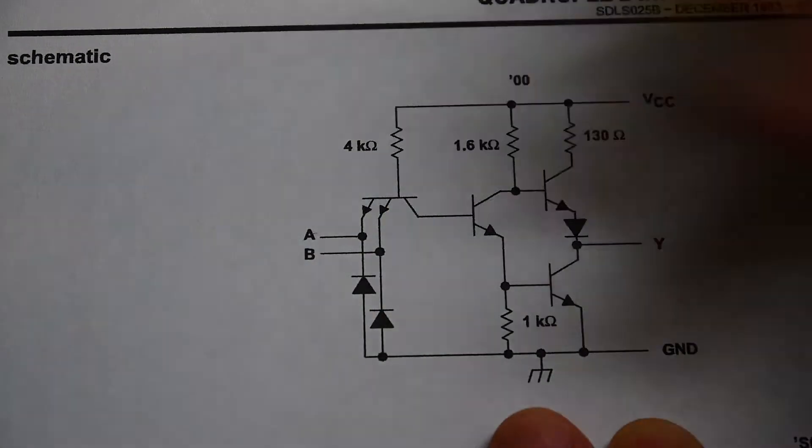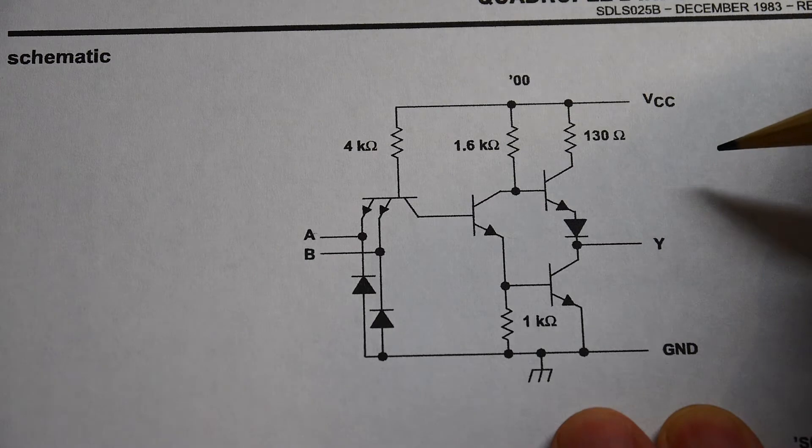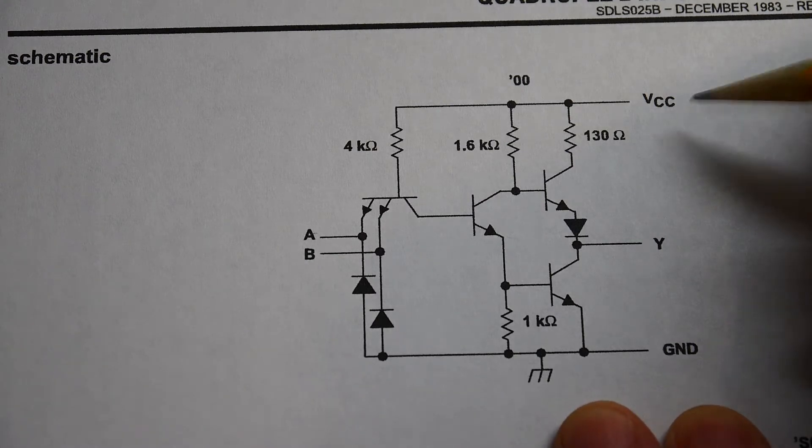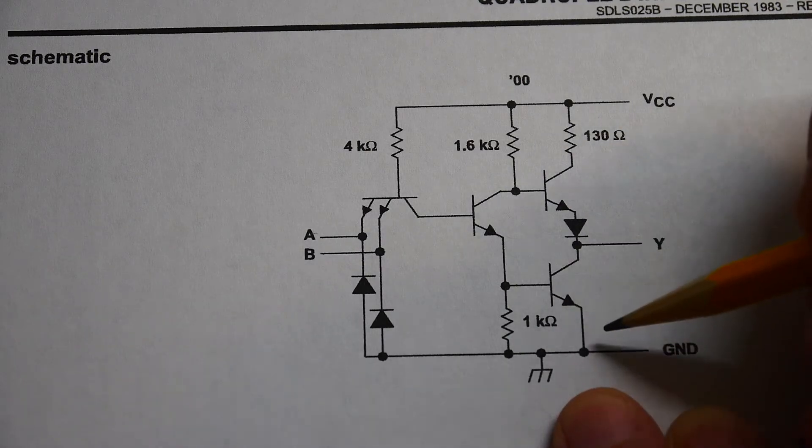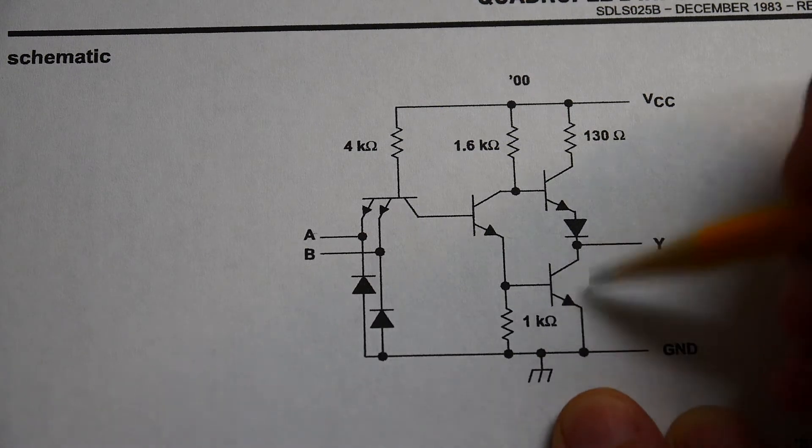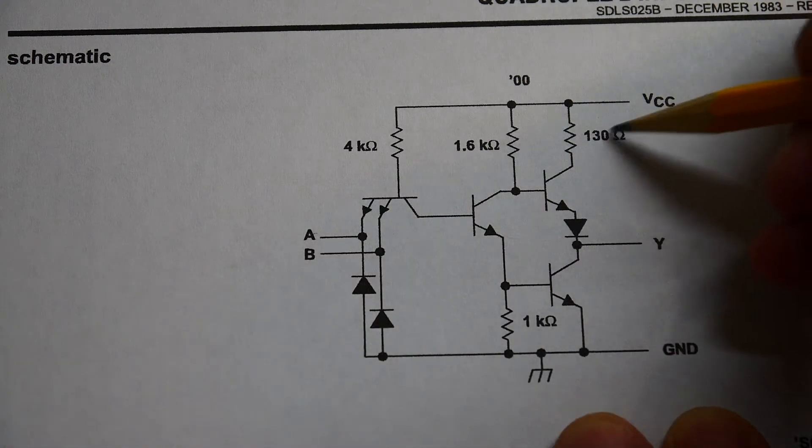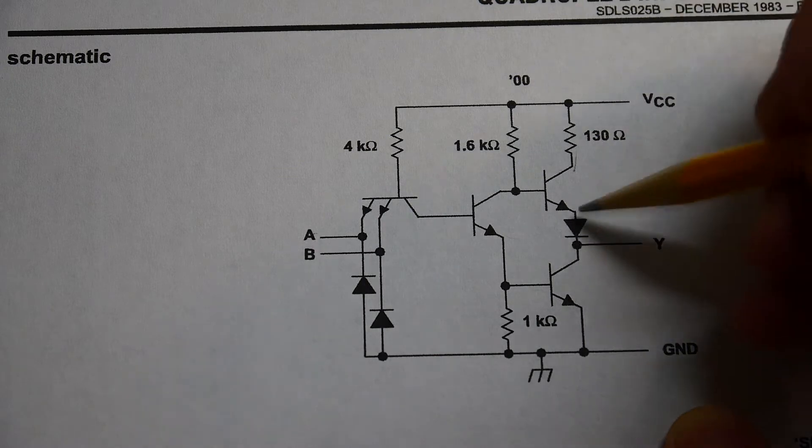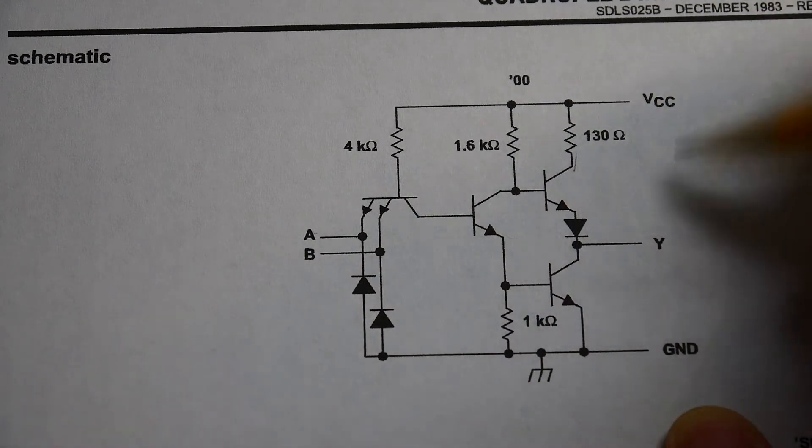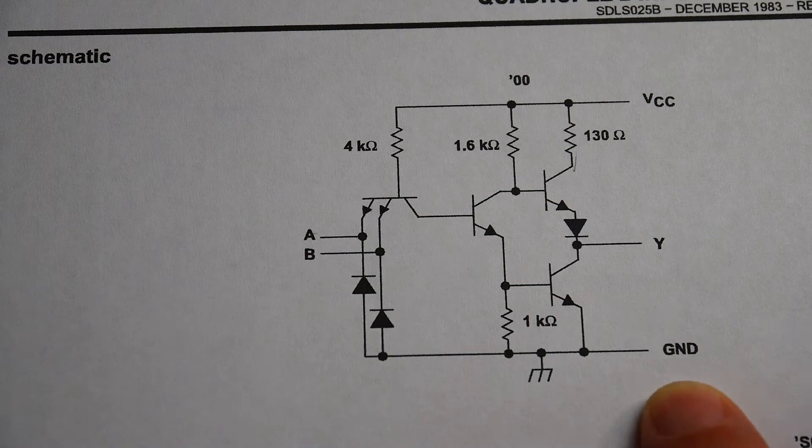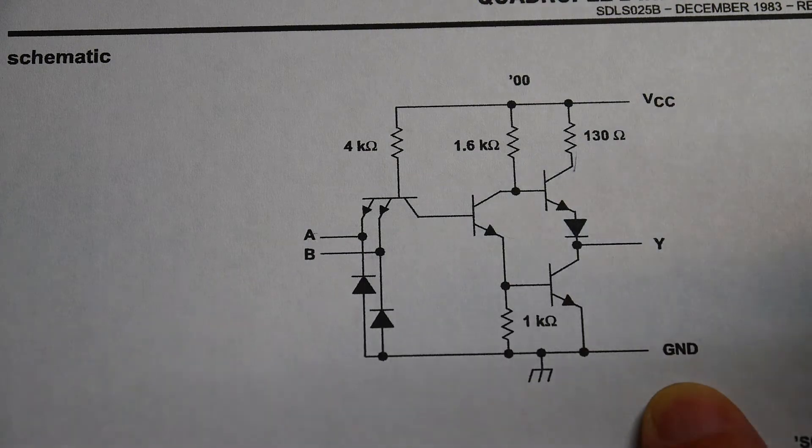It has two inputs and it goes through a funny set of transistors and then we have an output. The output is a push-pull totem pole. So we have a transistor to ground, so we have good current sinking capabilities for pulling down to ground. But pulling up we don't. We have this 130 ohm resistor in series and we have a diode in there and the voltage drop of the transistor and stuff. So it's difficult to pull up hard with a TTL device, and I've talked about that before. But this is a good example. It's 130 ohm impedance here at the top. You can see that's not going to get you there.